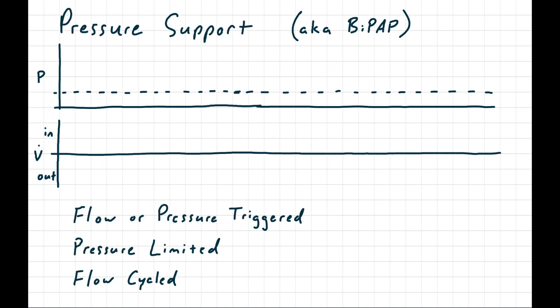The next mode we're going to look at adjusts the cycle as well — let's look at pressure support mode. To understand pressure support mode, start by thinking about how pressure assist would work. You're flow or pressure triggered, and you're pressure limited. But instead of being time cycled like in pressure assist, in pressure support you're flow cycled, which means you're letting the patient both start and stop the breath.